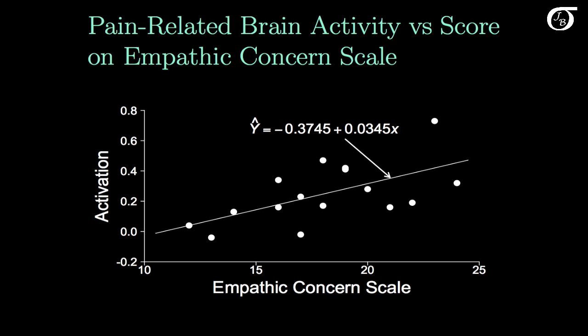Here's an example I've looked at previously: pain-related brain activity versus score on the empathic concern scale for 16 women. These women were given a score on the empathic concern scale — our x variable — by answering questions that helped measure their empathy towards others. They then watched as their partner had a painful stimulus applied, and an MRI measured activation level in the pain centers of the brain — our y variable. Here we have the scatter plot for those 16 values with the least squares regression line fit in.